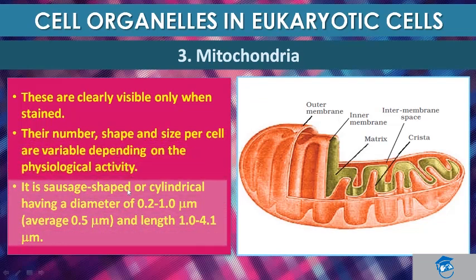Mitochondria are sausage-shaped, or they could be cylindrical, having a diameter of 0.2 to 1 micrometer, with an average of 0.5 micrometer. The length of mitochondria is 1 to 4 micrometers.